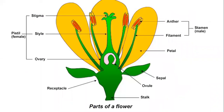Before moving straight forward to pollination, let us understand various parts of a flower and their importance, because they play a major role in pollination.